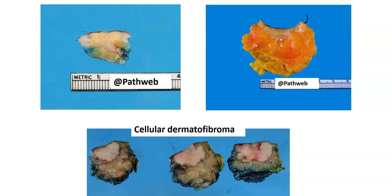Here is another example. On the cut surface, you can see a not so well-defined area of whitish discoloration extending from the dermis into the superficial subcutis. Here is another example — this is a cellular dermatofibroma, one of the variants. This lesion tends to extend a little bit deeper into the subcutis, and you can see that it is a little bit more well-circumscribed than the others.